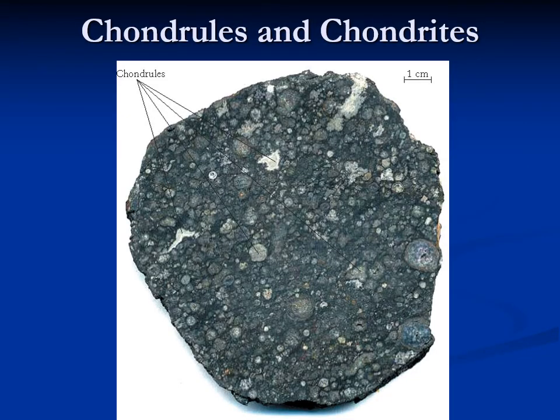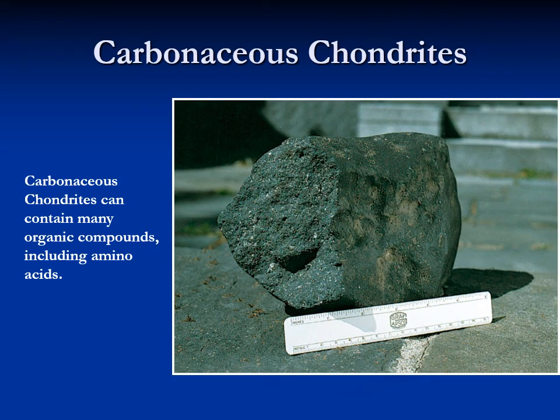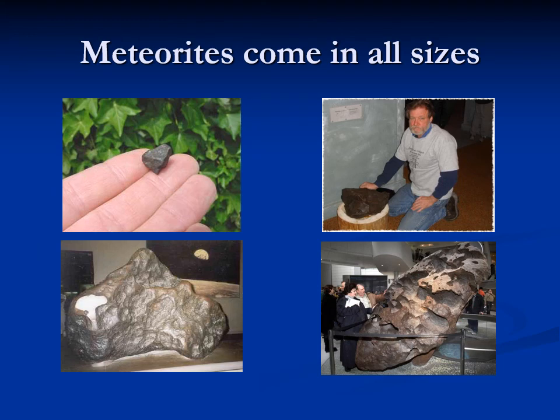Chondrites form in the protoplanetary disk itself and are technically stony meteorites, but form by a different process — the chondrules are among the first things to form in the solar system, then stick together to make chondrites. Carbonaceous chondrites still have these little nodules but are very rich in carbon, almost certainly forming in the outermost part of the solar system where ammonia, methane, and other compounds are present. Carbonaceous chondrites may be what you get from a dead comet, giving you something like an asteroid made of such material. Meteorites come in all shapes and sizes, from tiny fragments to great big giant ones.